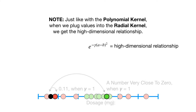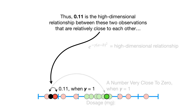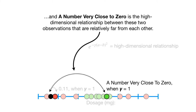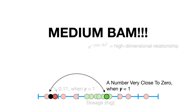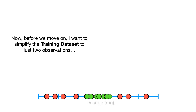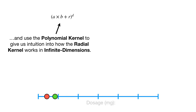Just like with the polynomial kernel, when we plug values into the radial kernel, we get the high-dimensional relationship. Thus, 0.11 is the high-dimensional relationship between two observations that are relatively close to each other, and a number very close to zero is the high-dimensional relationship between two observations that are relatively far from each other. Now, before we move on, I want to simplify the training dataset to just two observations, and use the polynomial kernel to give us intuition into how the radial kernel works in infinite dimensions.